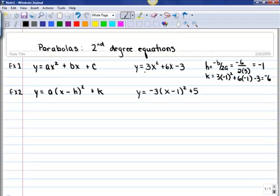So our vertex for the first example is at negative 1, negative 6. The other thing we note is if a is a positive number, if a is greater than 0, the parabola opens upward. If a is less than 0, the parabola opens downward.